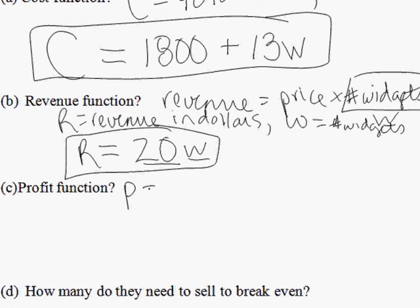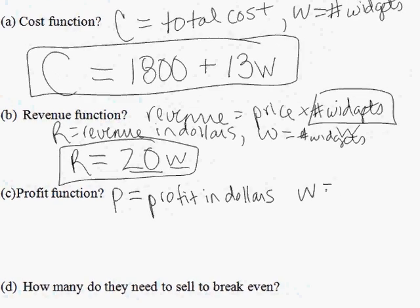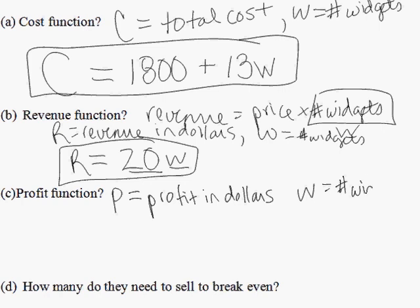Profit. Again, we define our variables. P is going to be profit in dollars. And W, again, is number of widgets that they both produce and the number of widgets they sell. In this problem, we're going to assume this is a very simplistic model that everyone that they produce, they also sell, which isn't really true in real life. But we're going to make it a nice, simple model in this situation.